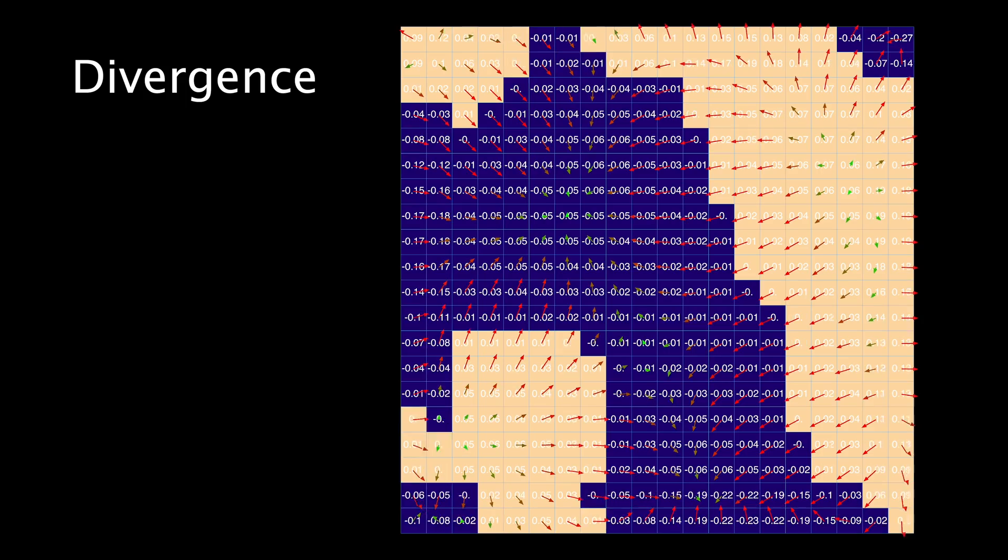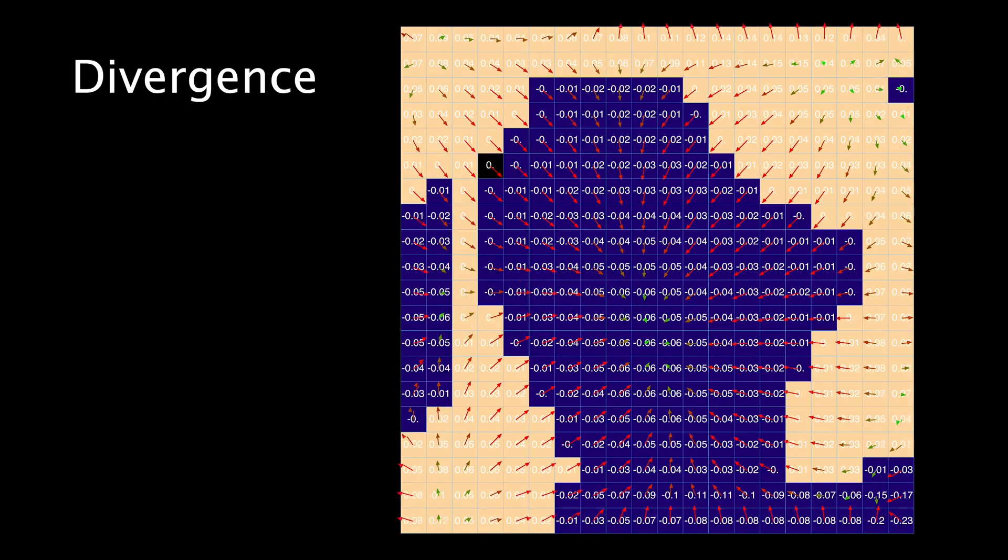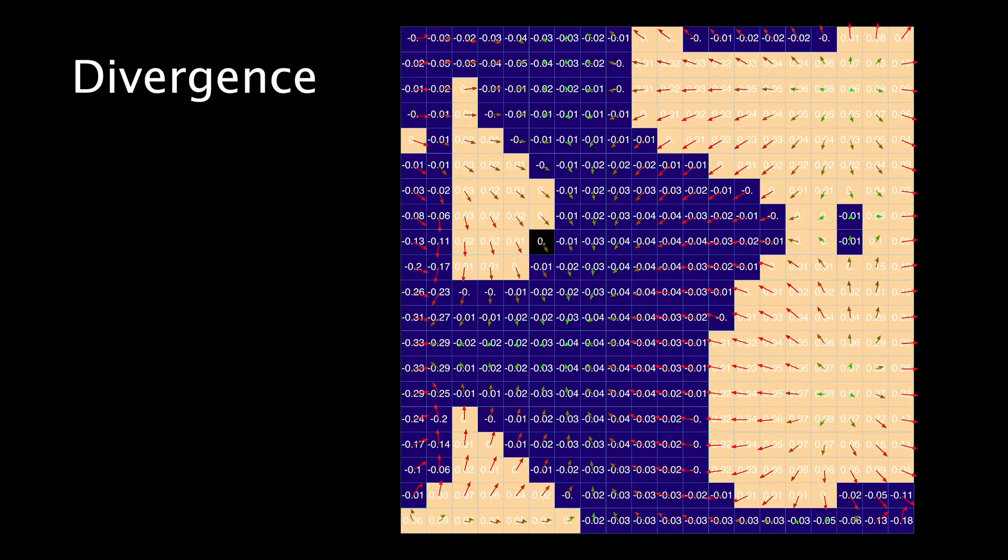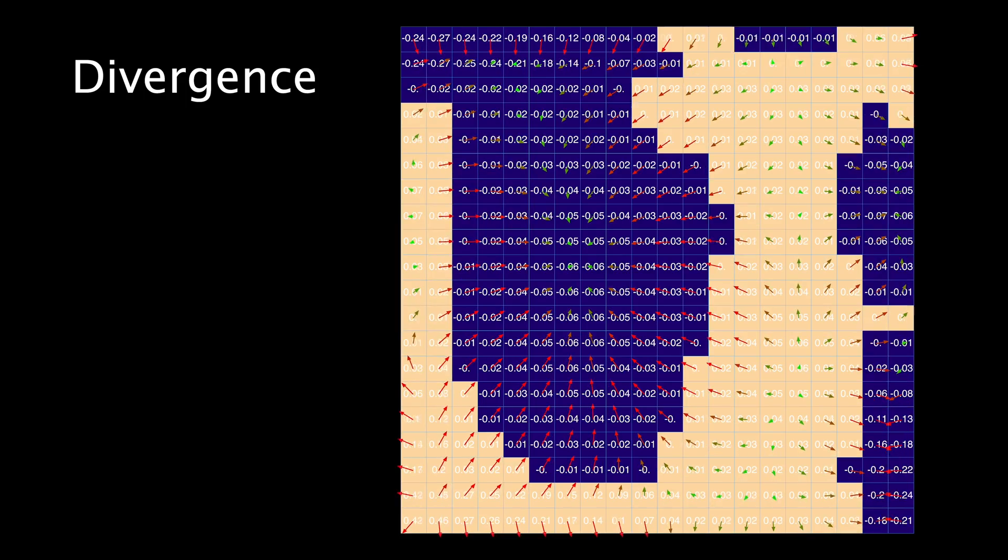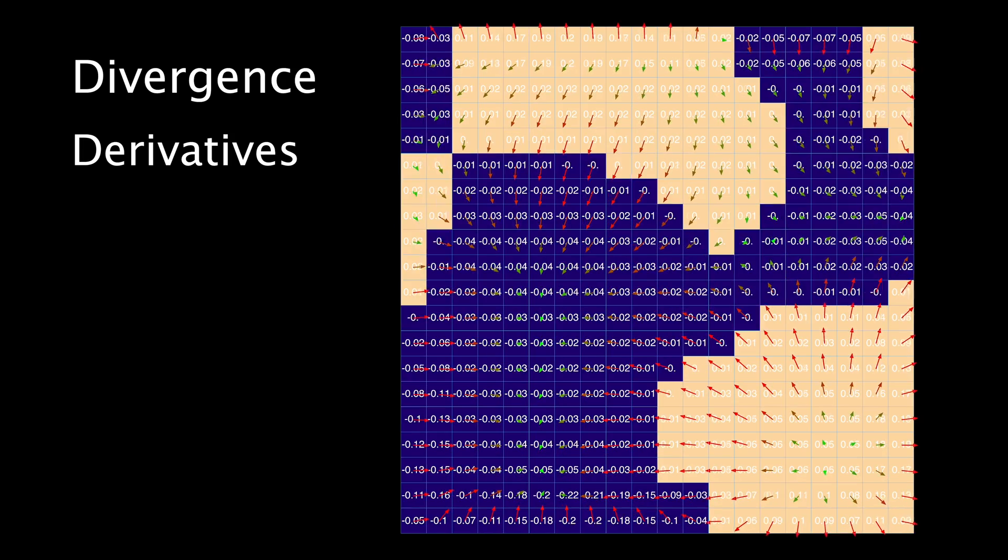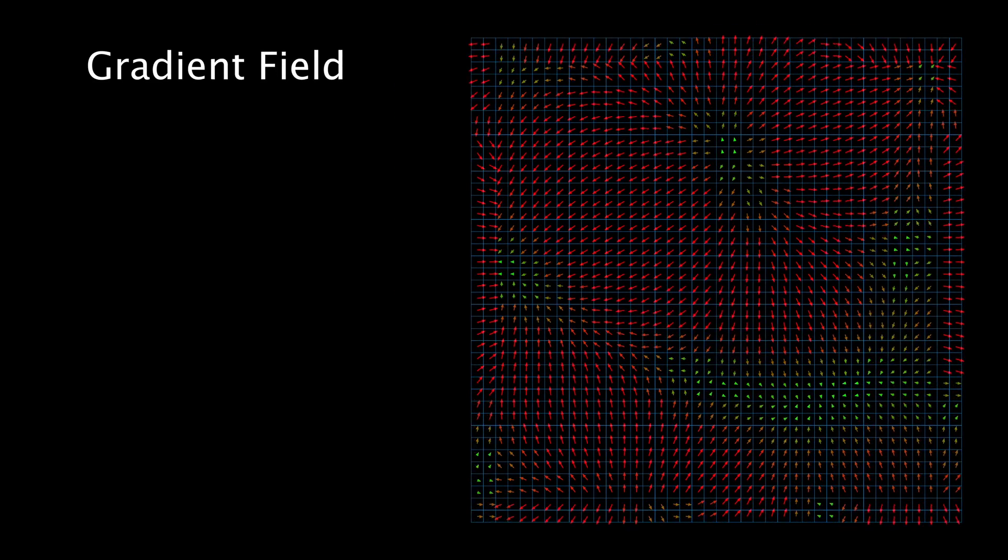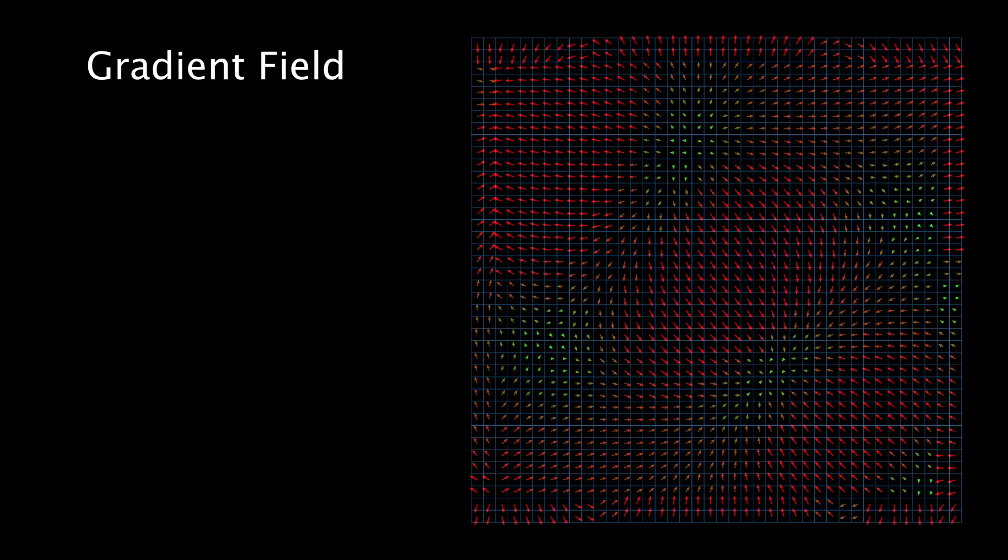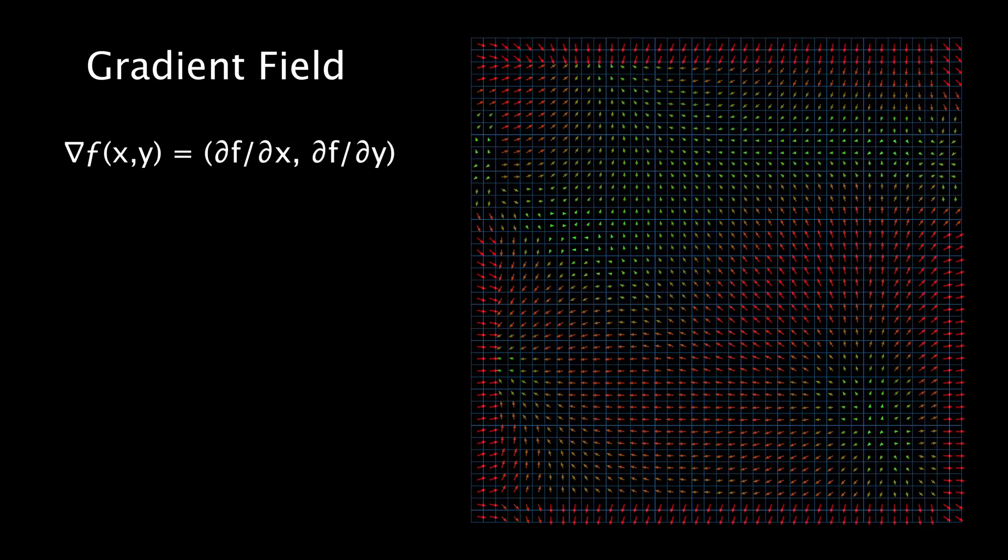I wanted this next video of the series to be about divergence, but I think that before we dive into that, it's useful to take one step back and revisit the concepts of derivatives and how we used it in the gradient video. In that video, we didn't see the mathematical formula for a 2D gradient, so let me show it now and let's break it down.